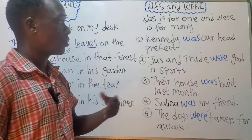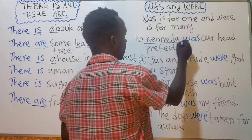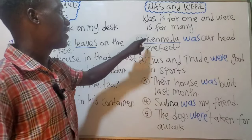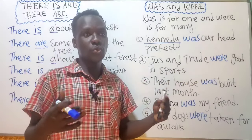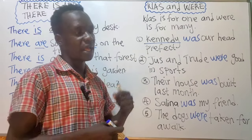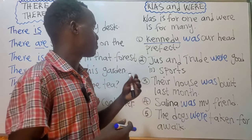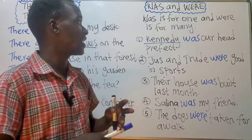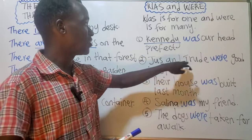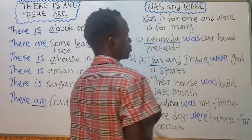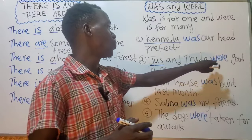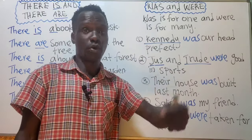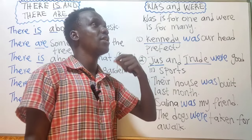Let us see examples. Kennedy is only one person, so: 'Kennedy was our head prefect.' You don't need to specify whether it's a man or a woman — you only need to know the number and the tense. Next, Justin and Truth are two people, which is plural, and it's past tense, so 'was' changes to 'were': 'Justin and Truth were good in sport.' Two people, past tense, so we use 'were.'